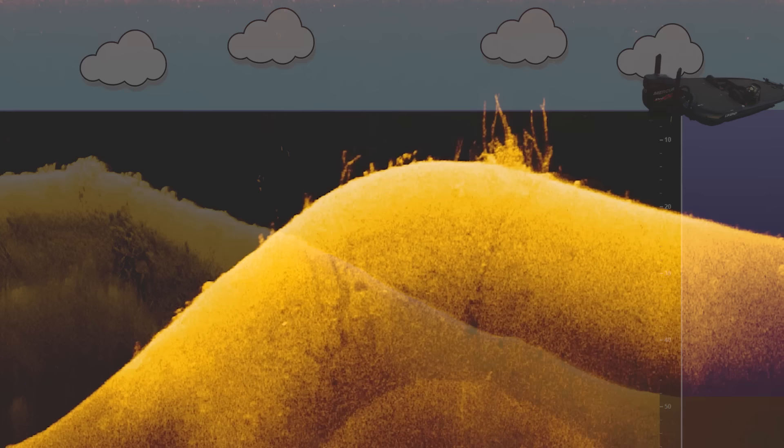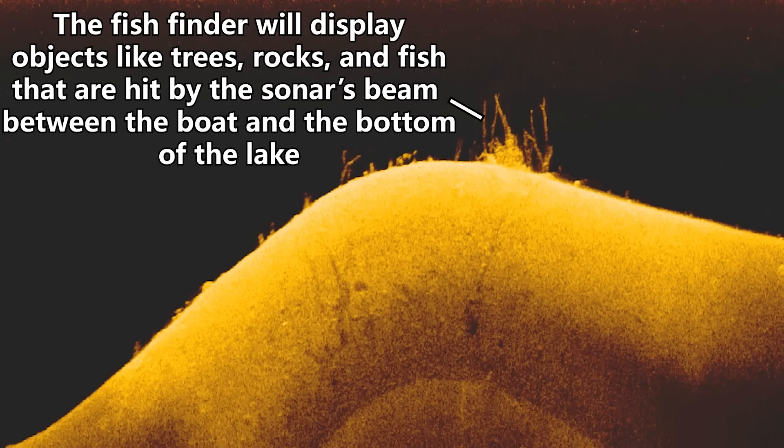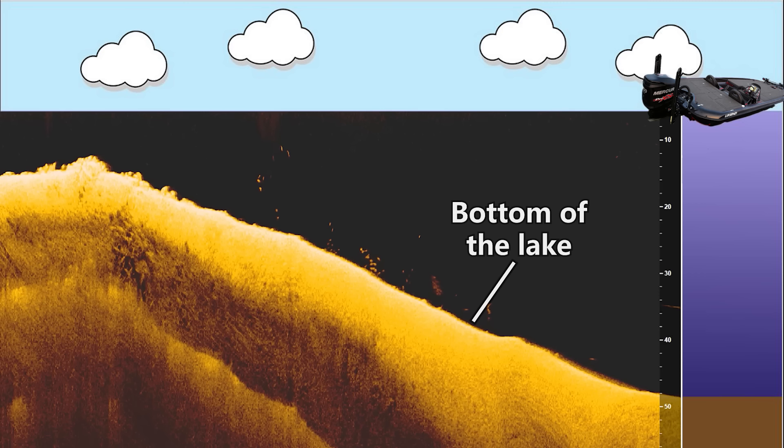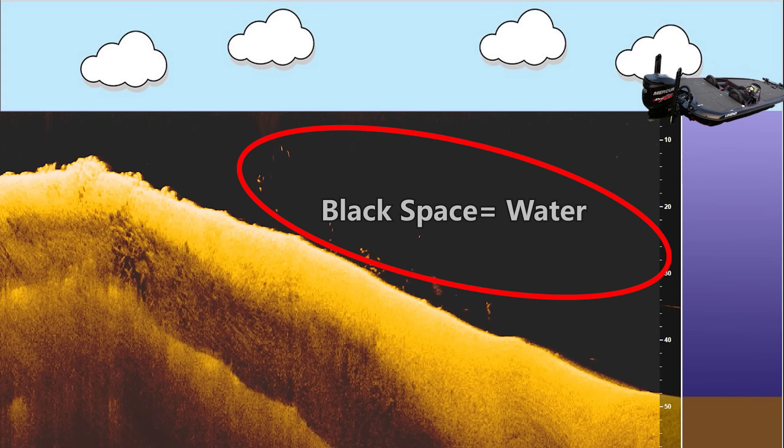The fish finder can also identify different objects between the transducer and the bottom — things in the water column like trees, brush piles, grass, fish, or anything between the surface and the bottom. The bottom of the lake is where the colored section starts in the center of the image. All the black space above the colored section is the water between the surface and the bottom, and the top of the image is where the surface of the water is.